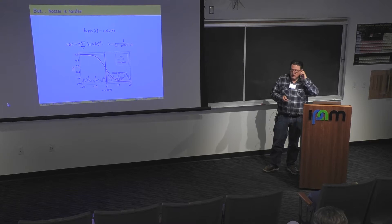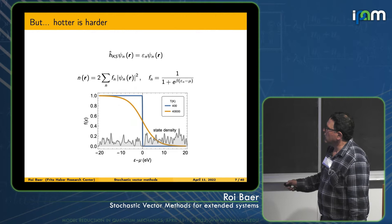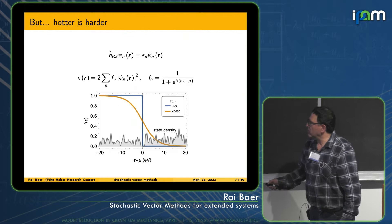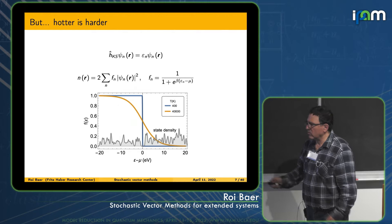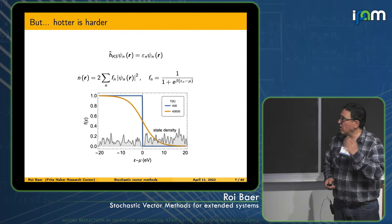Also, Kohn-Sham theory does not simplify when systems become hotter; it actually becomes more complicated. Once you have temperature, you need to occupy states according to the Fermi-Dirac distribution, so you also need to occupy excited states, of which there are many more than the occupied states. In large systems this is a very dense manifold. As temperature grows, you need to work much harder to do a finite-temperature density functional calculation.